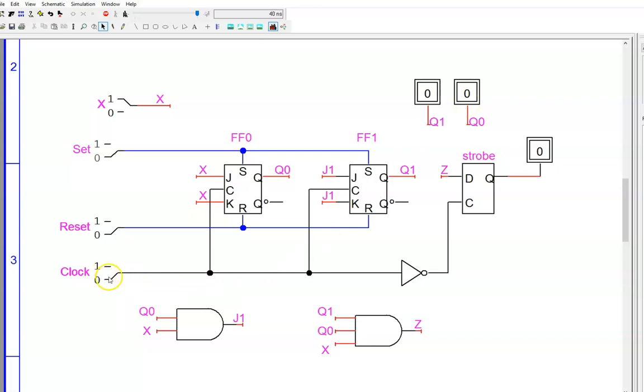I flip the clock, and now the bank, or the state memory, updates from zero zero to zero one. There is one cent in the machine.